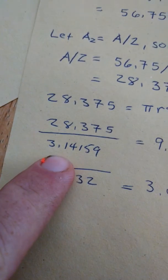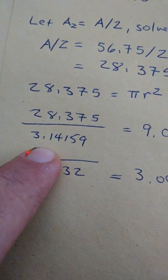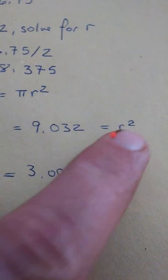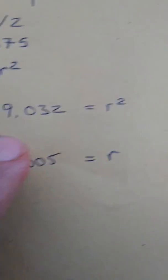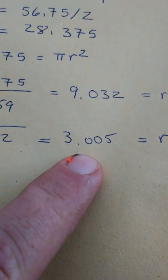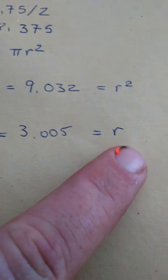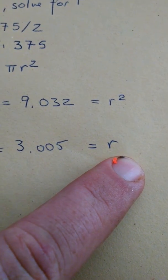Solve for R. Divide 28.375 by pi equals this. That's R squared. Take the square root of this to get 3.005 centimeters. 3.005 centimeters is the radius of your second circle.